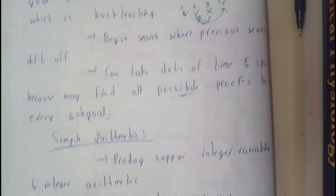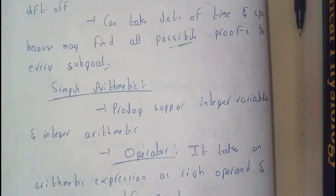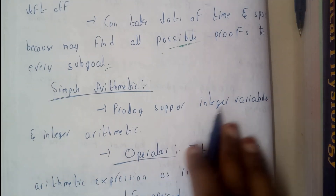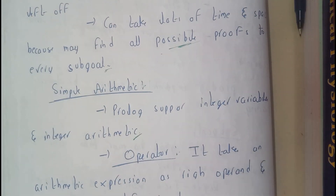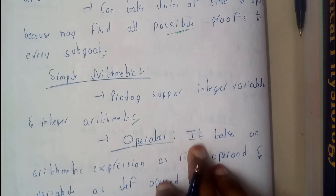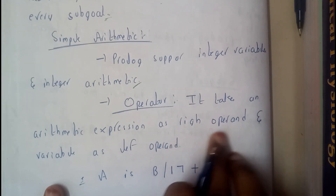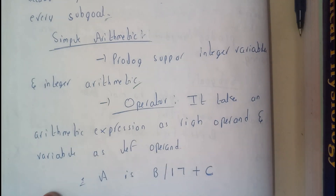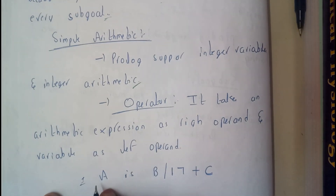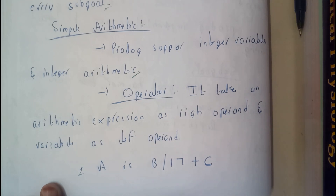Now let us go through simple arithmetic in Prolog. Prolog supports integer variables and integer arithmetic. Operators take an arithmetic expression as the right operand and a variable as the left operand — for example: A is B / 17 + C. This is a simple arithmetic expression in Prolog.